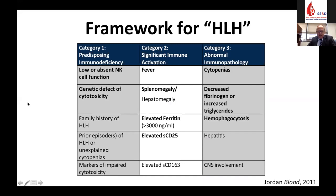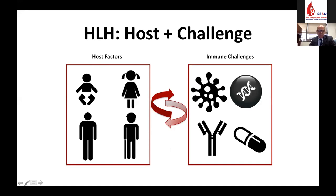Working with the Cincinnati group led by Michael Jordan, we conceptualized diagnostic criteria where patients have some predisposing immune deficiency — NK cells or T cells that don't work, genetic defects of cytotoxicity, family history — and that immune deficiency leads to immune activation evidenced by fever, splenomegaly, elevated ferritin, and soluble IL-2 receptor. That immune activation then leads to immune pathology: cytopenias, DIC resulting in decreased fibrinogen, and hemophagocytosis. Host factors depend on the developmental stage of the patient, and immune challenges depend on environmental or antigenic triggers.